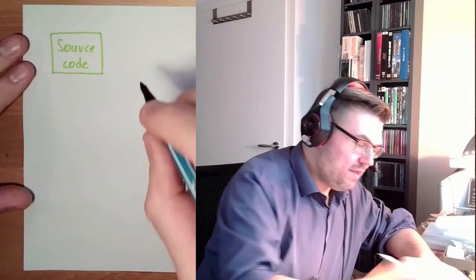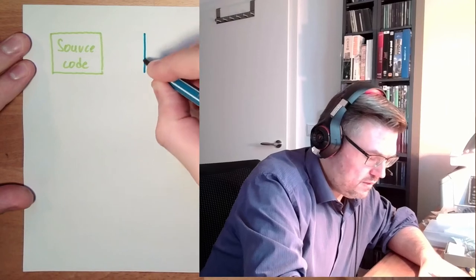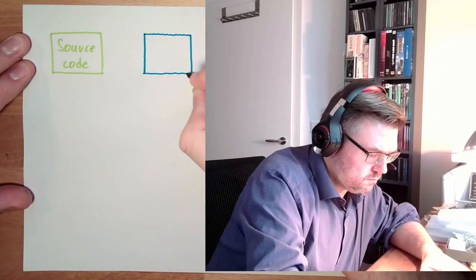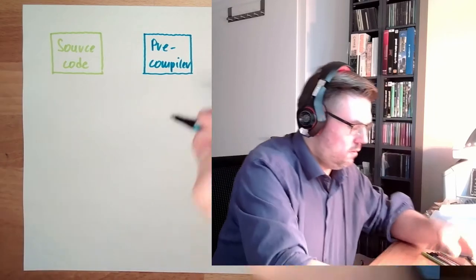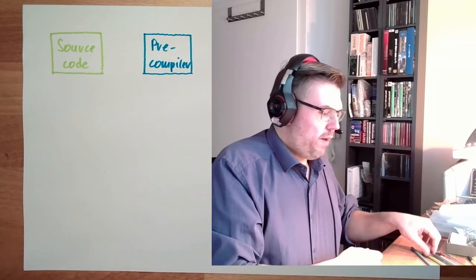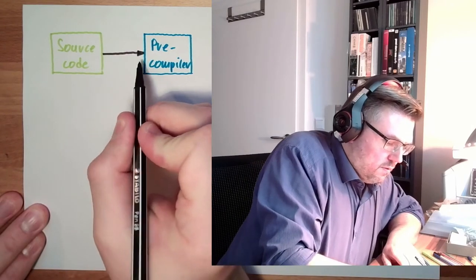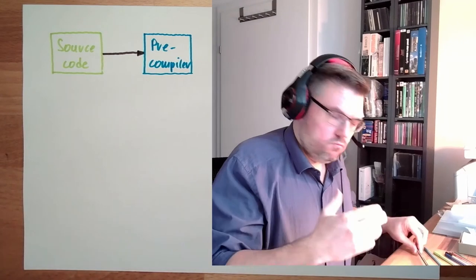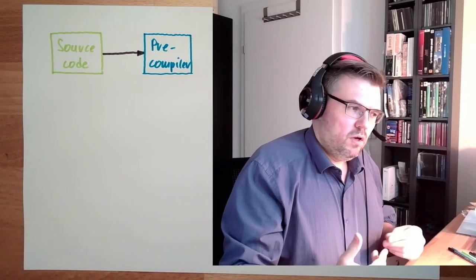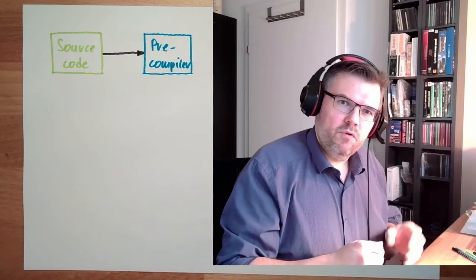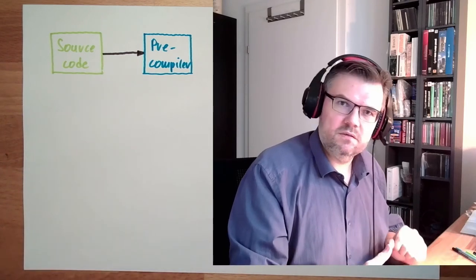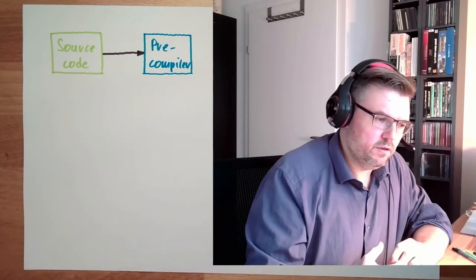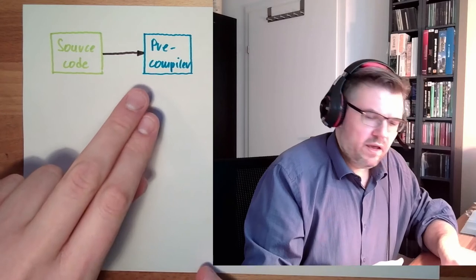The source code then might be fed into a so-called pre-compiler. I said might because this does not need to happen. There's a pre-compiler. This pre-compiler is replacing some parts of the source code. In the most simple case, it's just a transition, replacing one word with another word. It's the most simple part. Search and replace. Like the C pre-processor does.